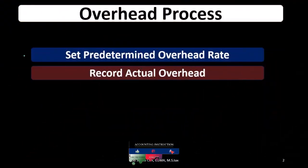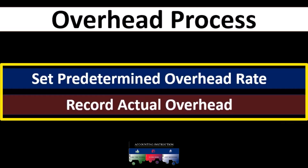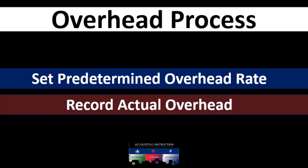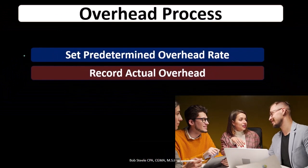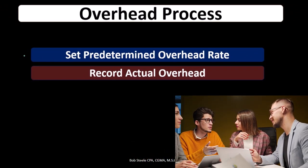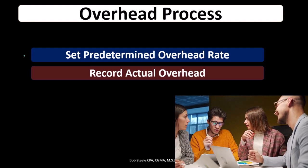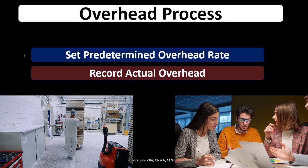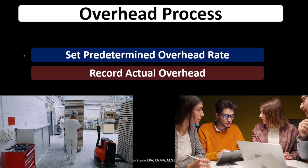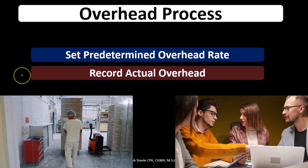We're then going to record actual overhead — the actual overhead that we have during the process. Actual overhead is the cost of anything that we can't apply directly to a job. So anything related to the manufacturing process that we cannot apply directly to a job — indirect materials, indirect labor, depreciation, utilities on the warehouse — we're going to put that into overhead.